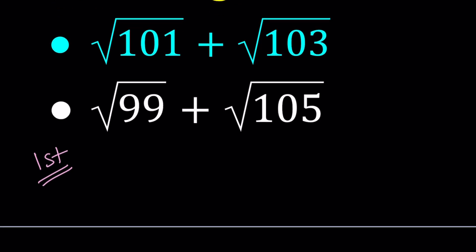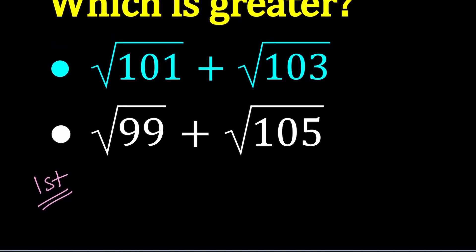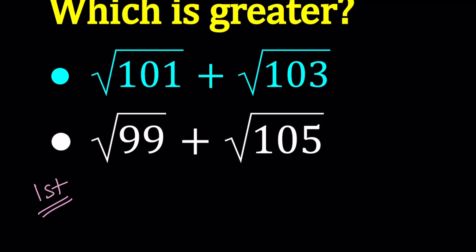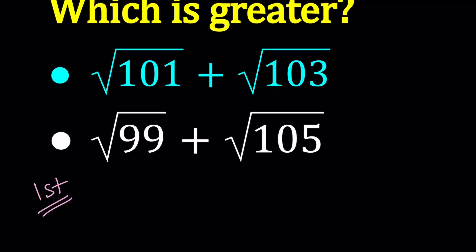Here's what I'm looking at. 101 and 103 differ by 2. When I look at the second number, 99 and 105, they differ by 6. So the difference isn't constant. What is constant? Their sum. Because when one of them decreases by 2, the other one increases by 2. So their sum is constant.